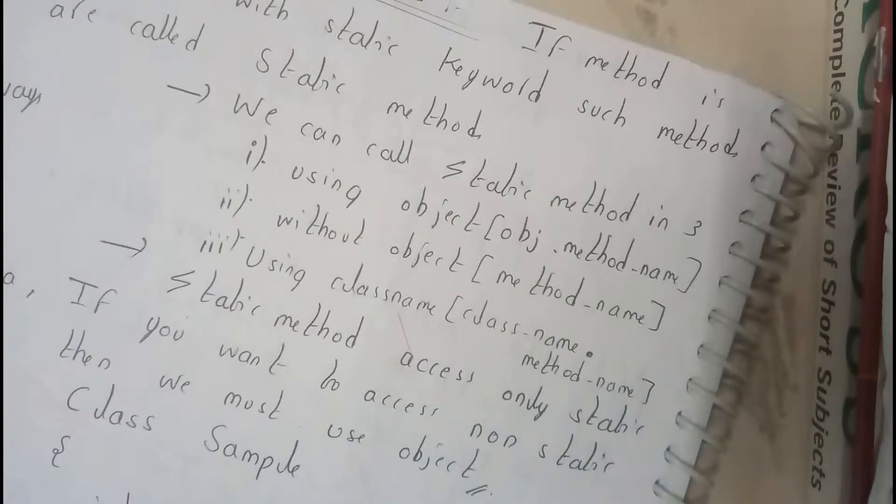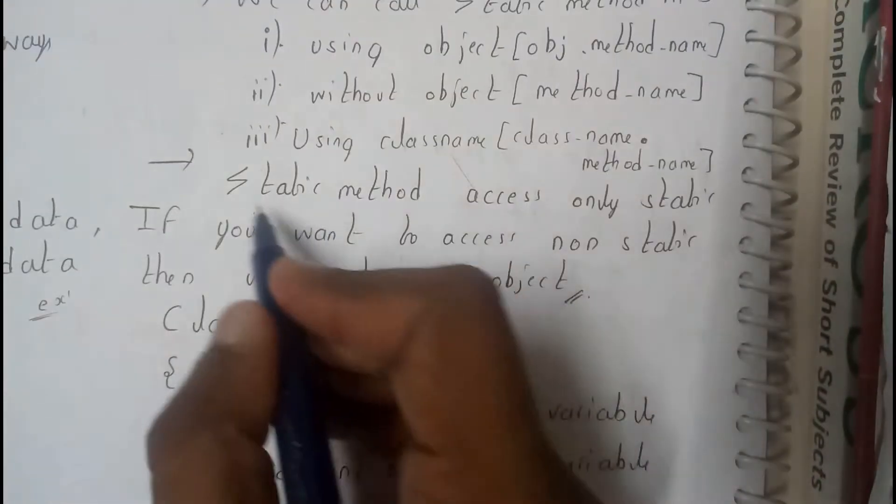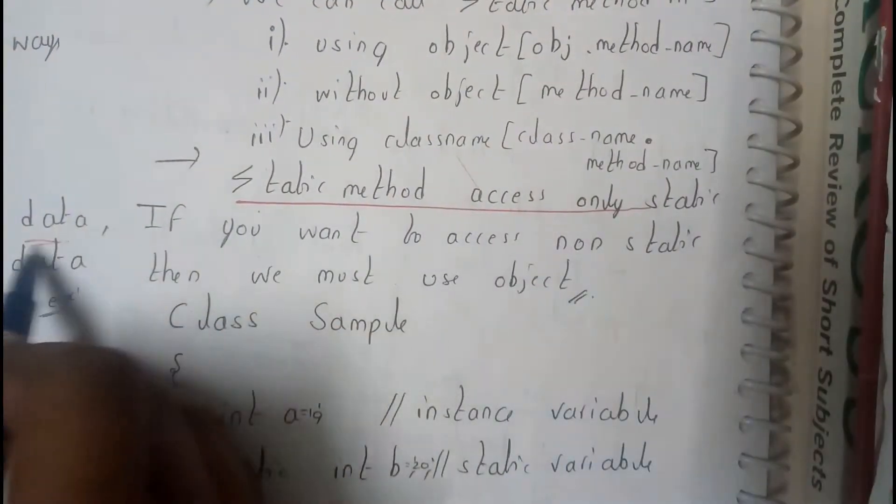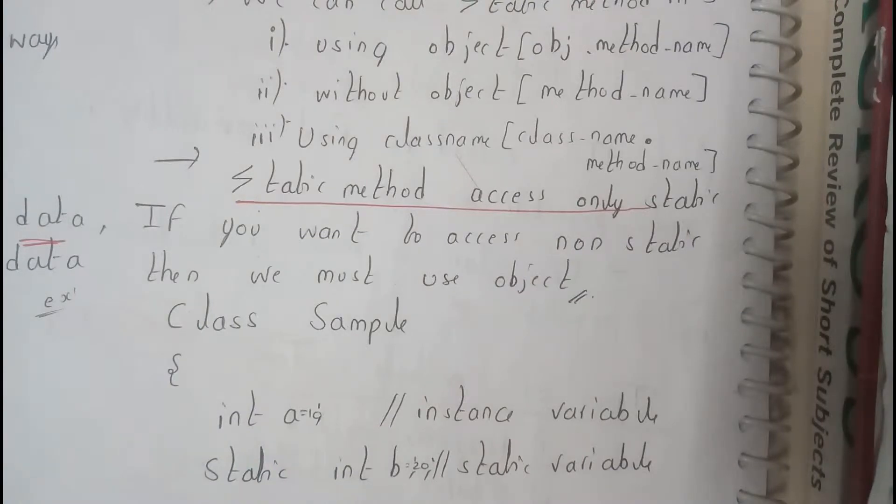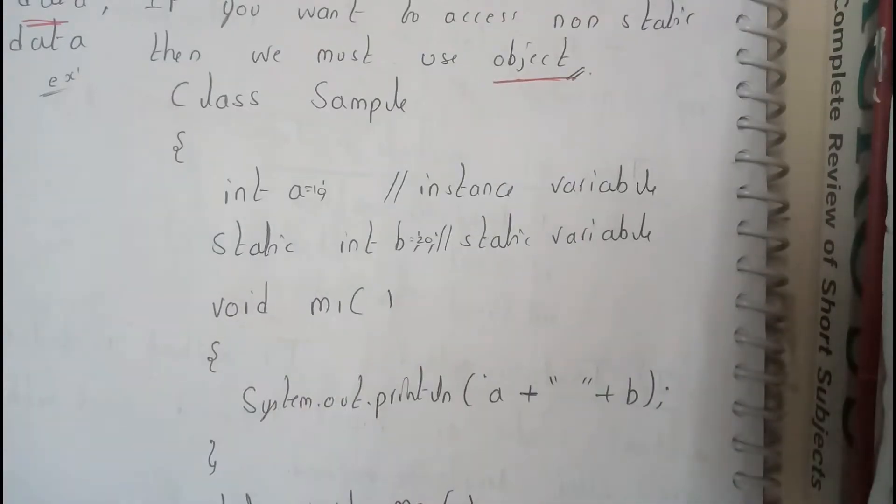Static methods access only static data. Remember this, that's really an important thing. Static methods access only static data. If you want to access non-static data, we must use an object.